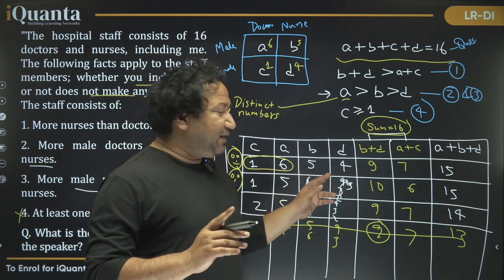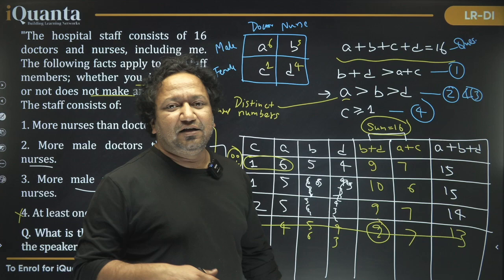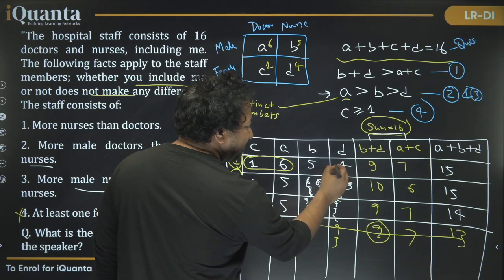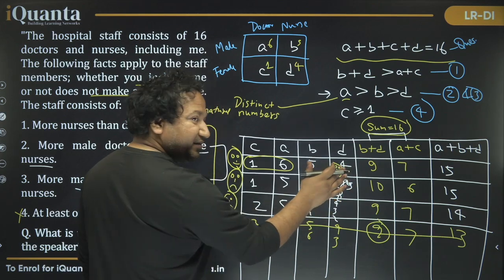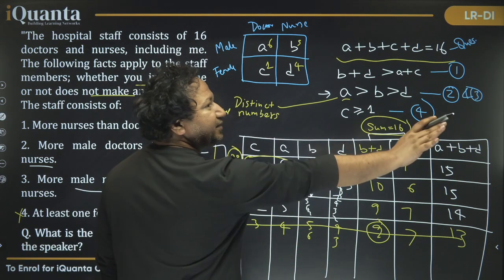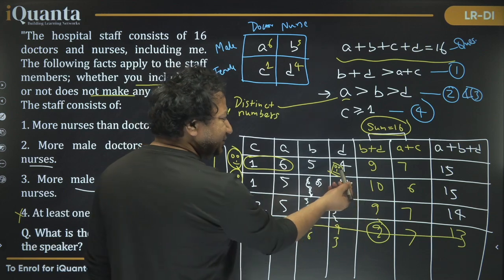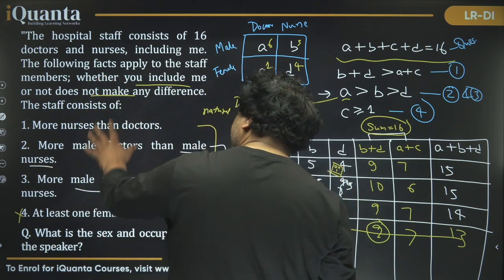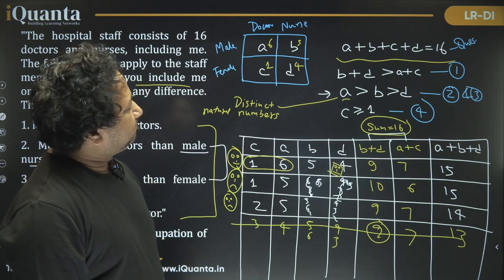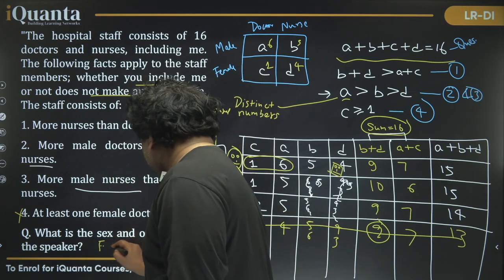If the speaker is from group d (female nurses), then d becomes 3, and the values become a = 6, b = 5, d = 3. All conditions are still satisfied: a > b > d, and c = 1 ≥ 1. So the speaker must be from group d — a female nurse. The speaker's sex is female and occupation is nurse.